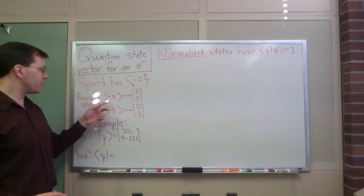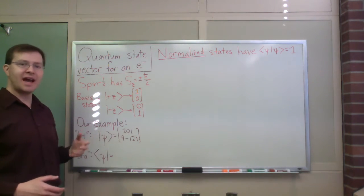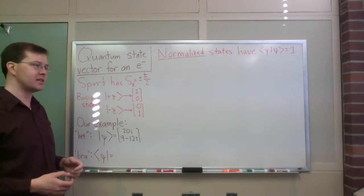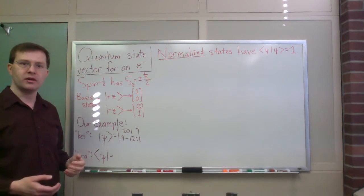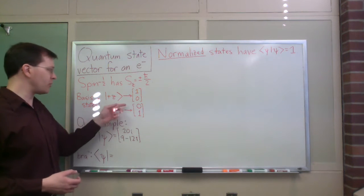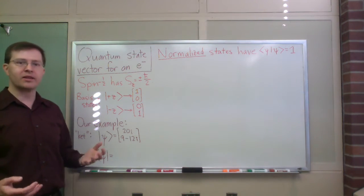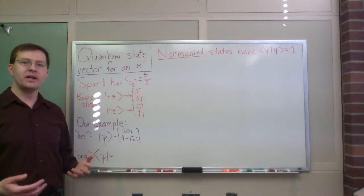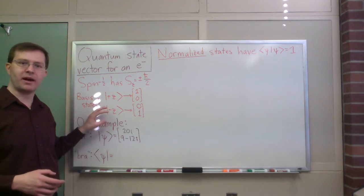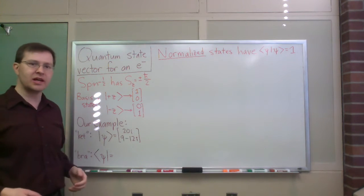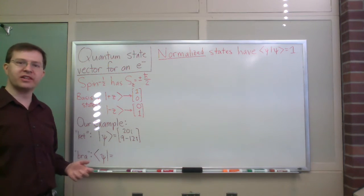So we can use those two states, the plus and minus h-bar over 2 spin-z states, as a basis for this space of states. The plus-z state we'll treat as 1-0, a simple vector there. The minus-z state we'll treat as 0-1. And we'll find that we can describe any electron state by a combination of how is it like the plus-z and how is it like the minus-z. We'll get into the details as we go. So, in particular, I'm going to look at a specific example.